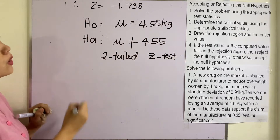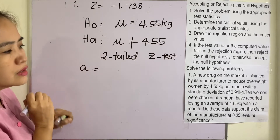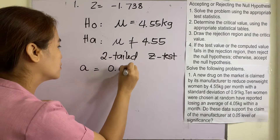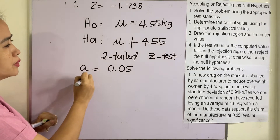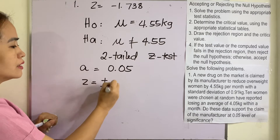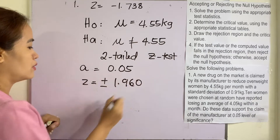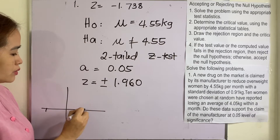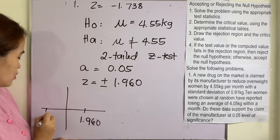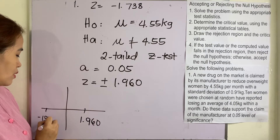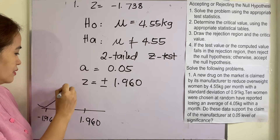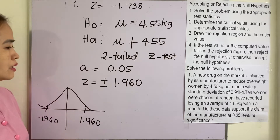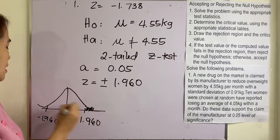We look for the significance level, which is 0.05. The critical value here will be Z equal to positive and negative 1.960. Using our normal curve, we place 1.960 and negative 1.960, and our rejection regions are in the two tails.